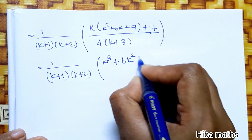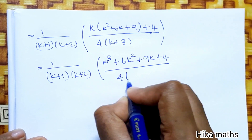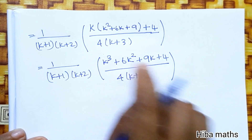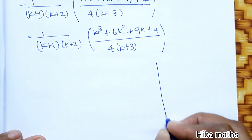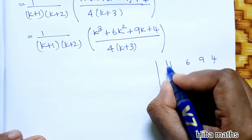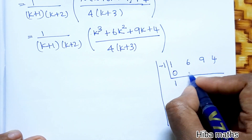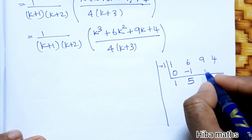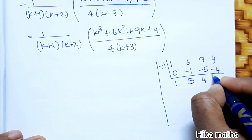Expanding the numerator: k³ + 6k² + 9k + 4, divided by 4·(k+3). Since we have a cubic expression to factor, we use synthetic division. Taking k = -1 as a root: 1, 6, 9, 4 with -1 gives remainder 0, yielding quotient k² + 5k + 4.